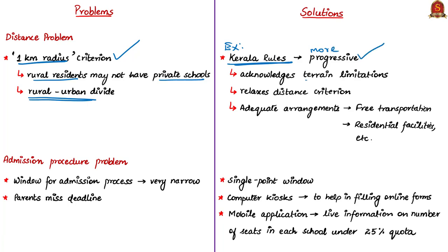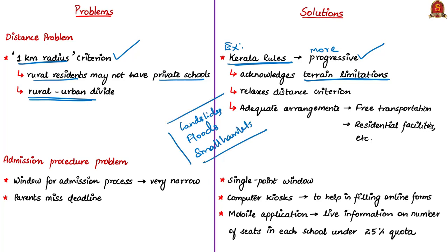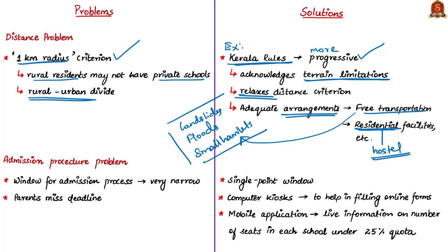Kerala's state rules relax the limit criteria in difficult places and the state makes additional arrangements such as free transportation. Where there is no school within walking distance due to difficult terrain or location, the state provides residential or hostel facilities for children in a nearby school. The authors say this example has to be followed by other states also.